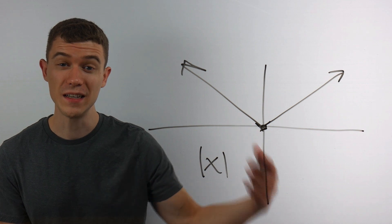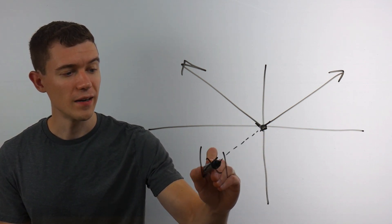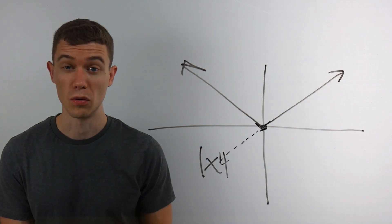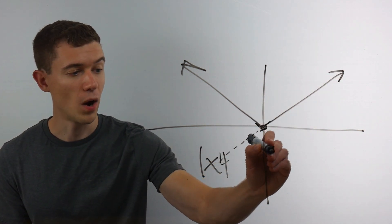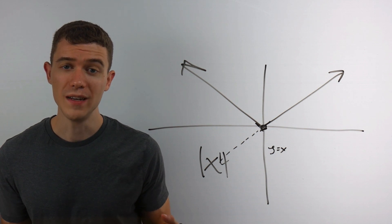You'll see it makes this kind of corner at the origin. That's because the absolute value of 0 is 0. And if you imagine this line, if you just made the regular line through the origin, that line would be y equals x.